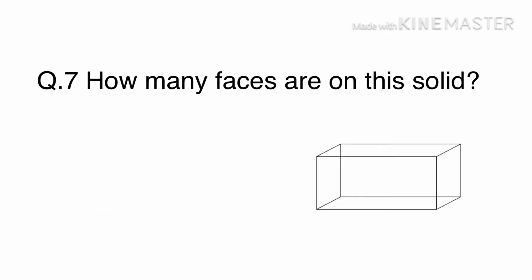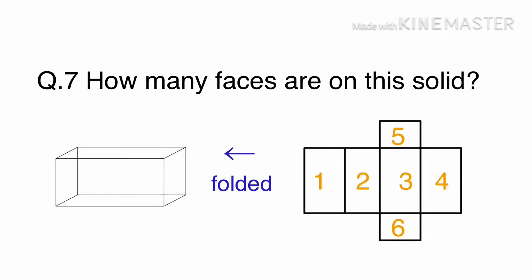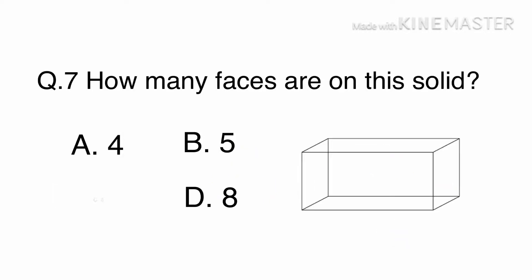Question 7: How many faces are on this solid? A. 4, B. 5, C. 6, or D. 7. Let's look at the net for this shape. There are 6 faces. The answer is C, 6.